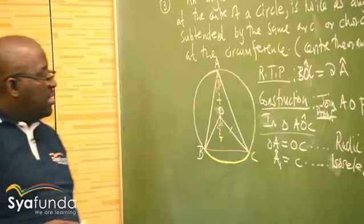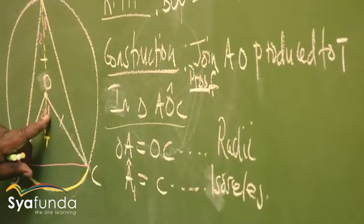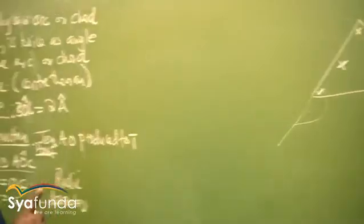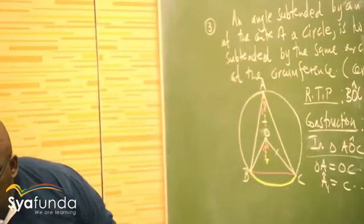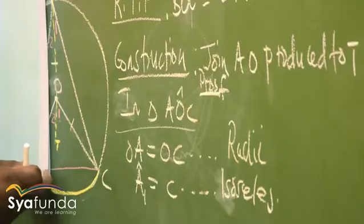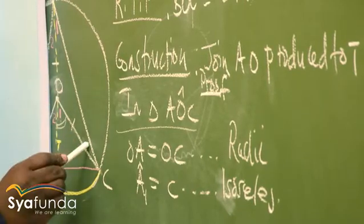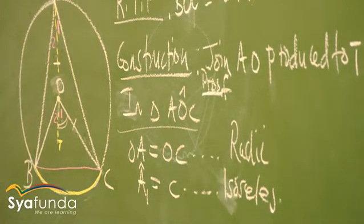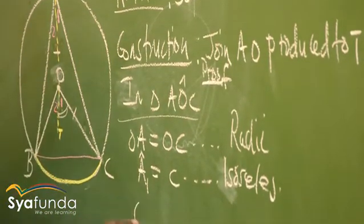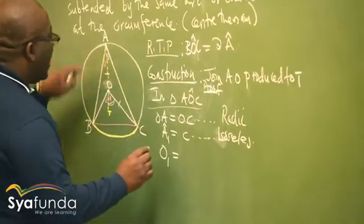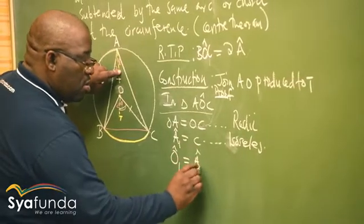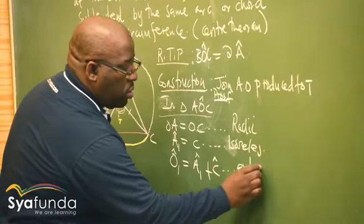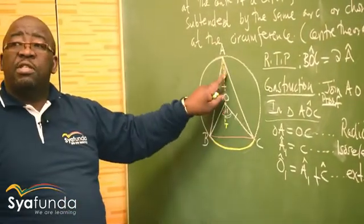Now that these two angles are the same, look at angle O1 — it is the exterior angle of this triangle. Using the exterior angle theorem: this angle equals the sum of the two opposite interior angles. So in this triangle, O1 equals angle A1 plus angle C. The reason: the exterior angle of a triangle equals the sum of the two opposite interior angles.